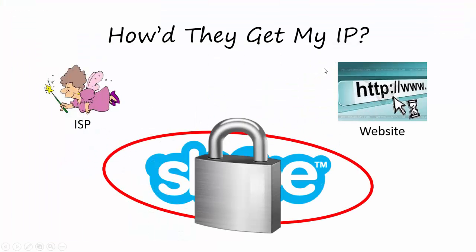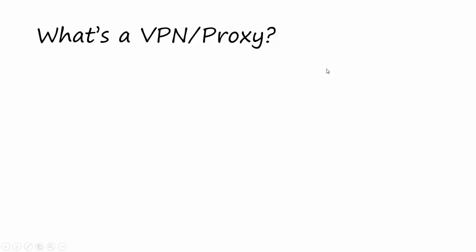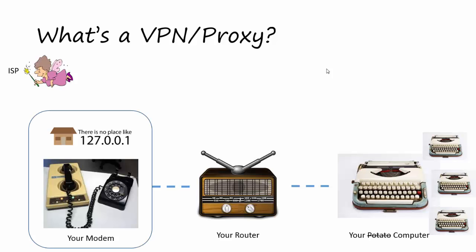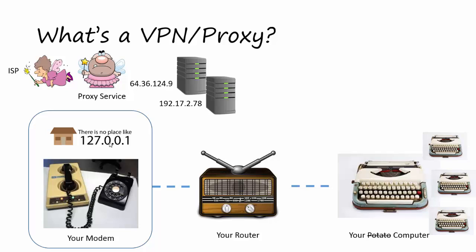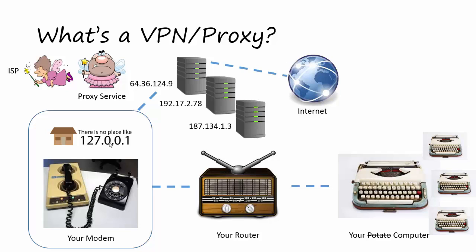Now that we know how they got your IP address in the first place, let's talk about other ways you can protect yourself, such as by using a VPN or proxy. A VPN or proxy is similar in some ways to an ISP, but they work in tandem with it. Here's your computer connecting to a router, the router connects to a modem, and your ISP is giving you an IP address. A proxy service is kind of like an ISP, but it's a tough ISP. They have servers out there that you can connect to and go through those servers to the internet overall.